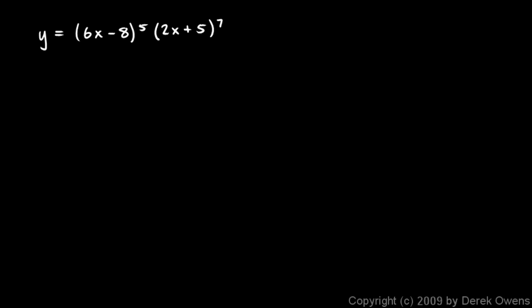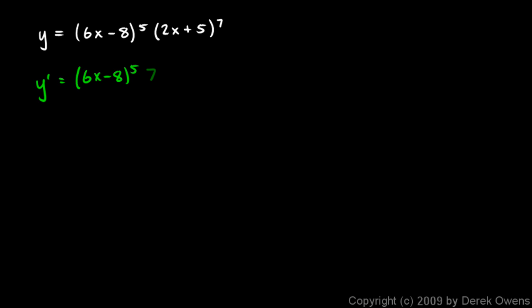In this example, y equals (6x minus 8) to the fifth times (2x plus 5) to the seventh. This is clearly the product of two functions — (6x minus 8) to the fifth is the first and (2x plus 5) to the seventh is the second. The derivative starts with the first times the derivative of the second. Using the power rule and chain rule, the derivative of (2x plus 5) to the seventh is 7 times (2x plus 5) to the sixth times 2.